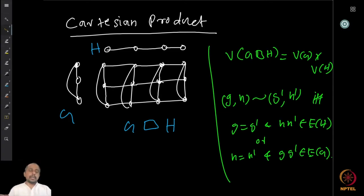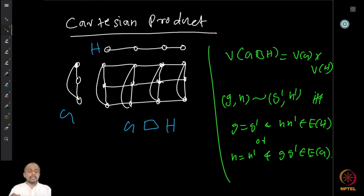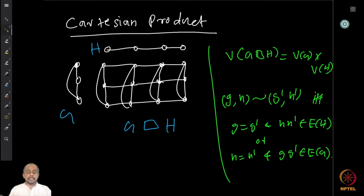Now how are the edges defined? There is an edge from a vertex (g, h) in the product to (g', h') if and only if either g equals g' — the same vertex — and h h' is an edge in the graph H, or h equals h' and g g' is an edge in the graph G. If either of these holds, you have an edge from (g, h) to (g', h').